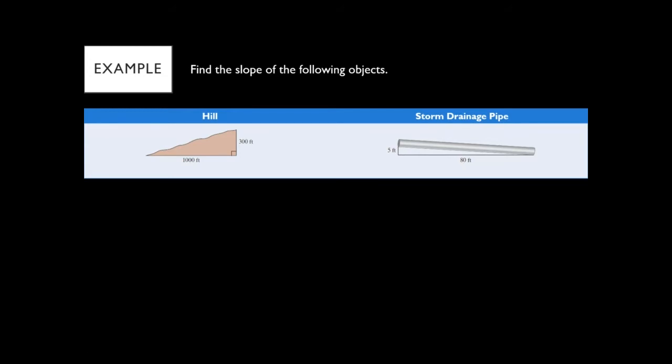Starting with objects, because this is more real life — you're measuring the steepness, how steep is something. We've got a hill and then we've got a storm drainage pipe. Our slope definition we're going to use here is the change in Y over the change in X.